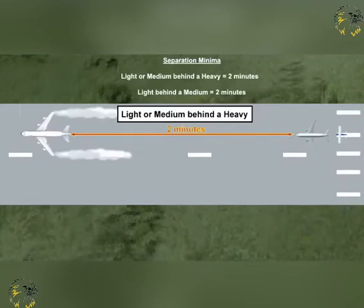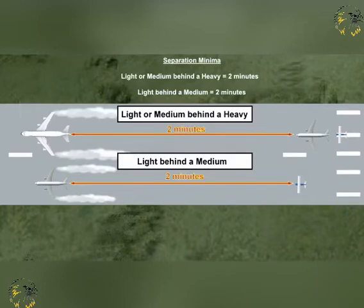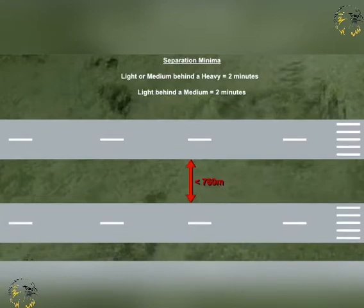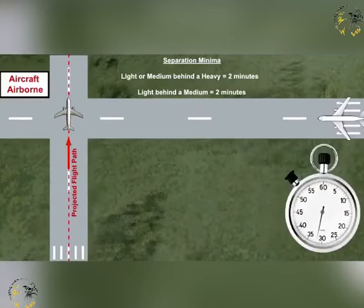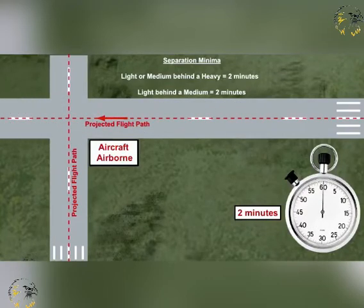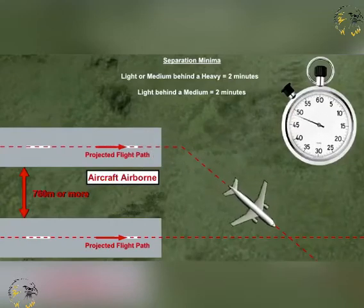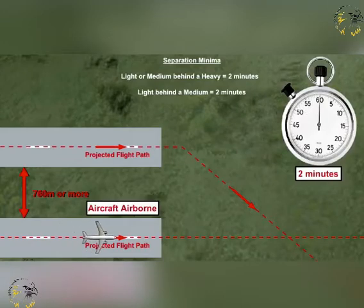A minimum of 2 minutes separation is applied between a light or medium aircraft taking off behind a heavy aircraft, or a light aircraft taking off behind a medium aircraft. This applies when the aircraft are using the same runway, or if they are using parallel runways separated by less than 760 metres. For crossing runways, the separation applies if the projected flight path of the second aircraft will cross the projected flight path of the first at the same altitude or less than 1,000 feet below it. For parallel runways separated by 760 metres or more, separation applies if the projected flight path of the first aircraft crosses the second at the same altitude or less than 1,000 feet below it.